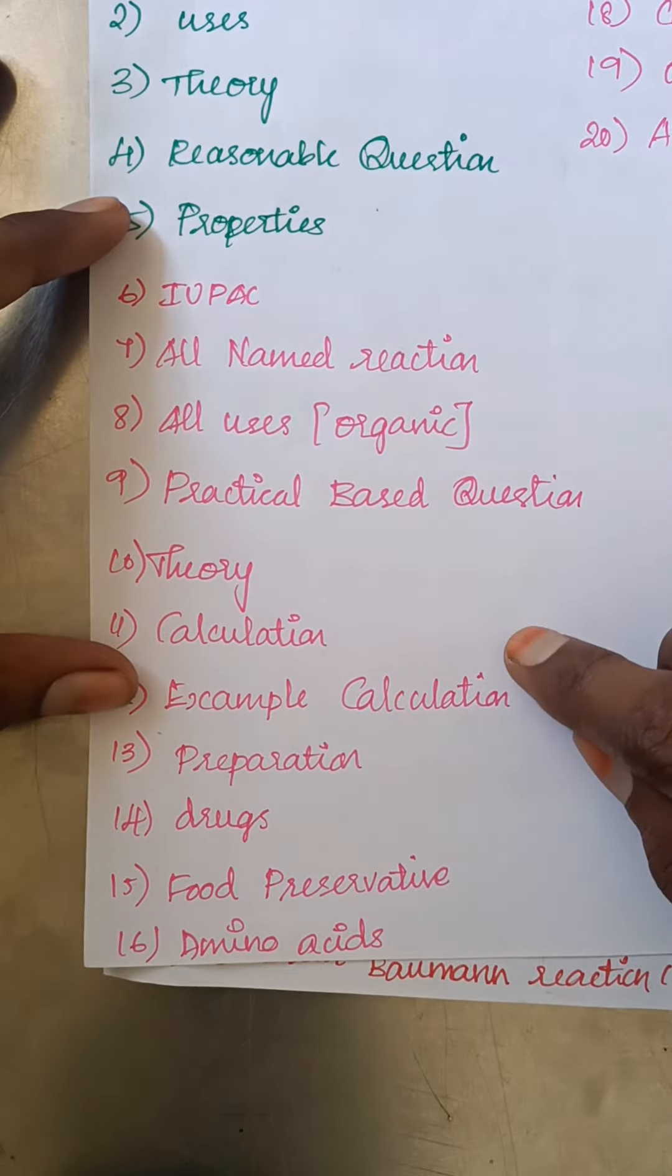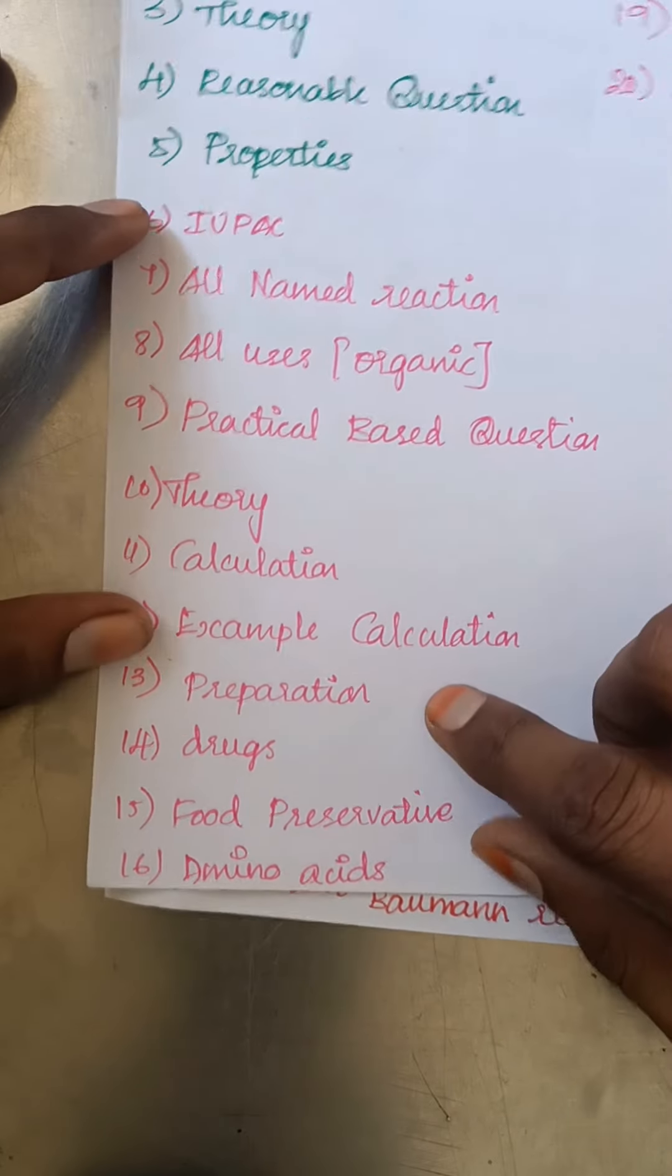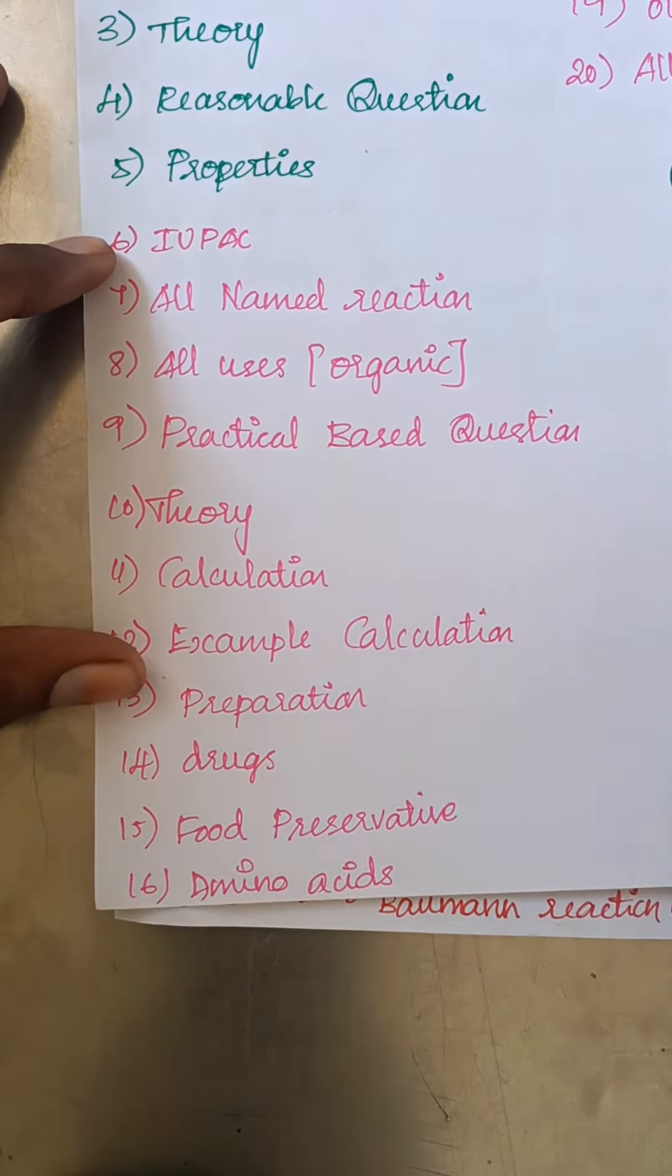Next, example calculation. In kinetics there are many problems. This is a compulsory problem. Next, preparation. Preparation is general in the first and second volume. There is a problem.